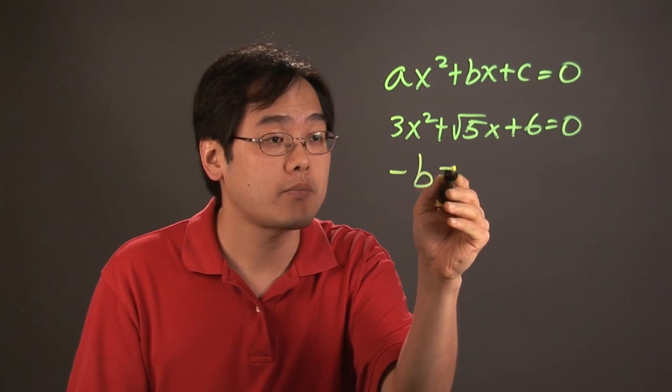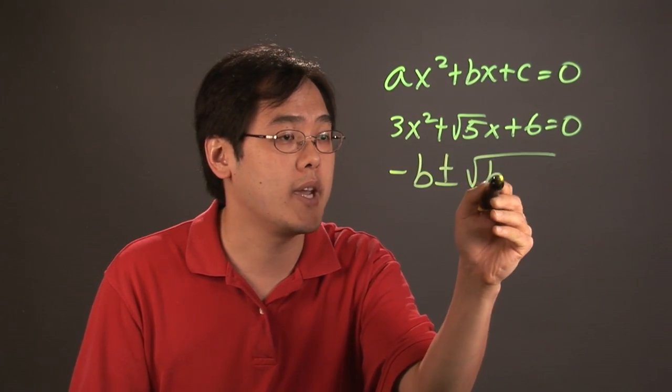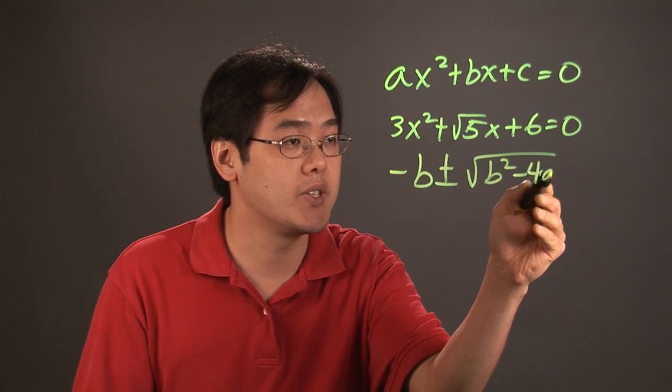Now, as a friendly reminder, it's negative b plus or minus square root of b squared minus 4ac over 2a.